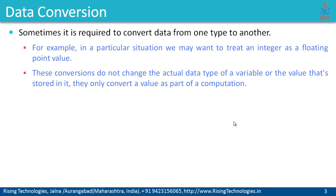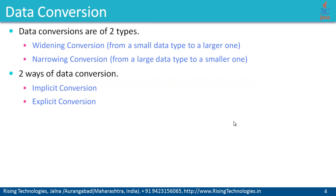Sometimes it is required to convert data from one type to another. For example, in a particular situation, we may want to treat an integer as a floating-point value. These conversions do not change the actual data type of a variable or the value stored in it — they only convert a value as part of computation. There are two types of conversions: widening conversion and narrowing conversion.